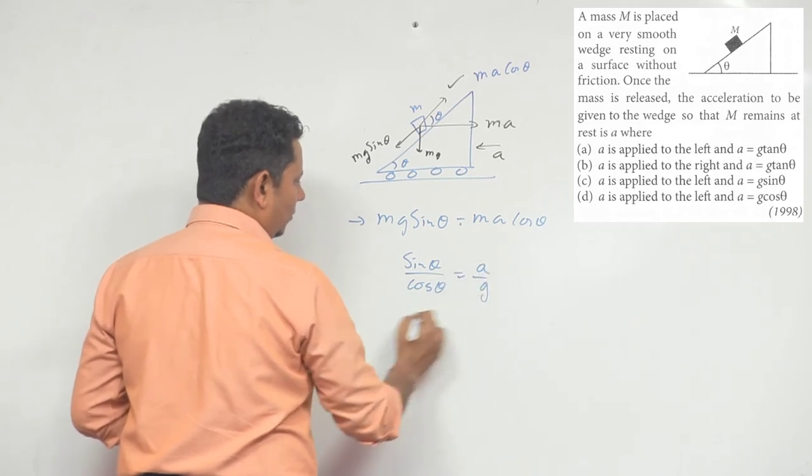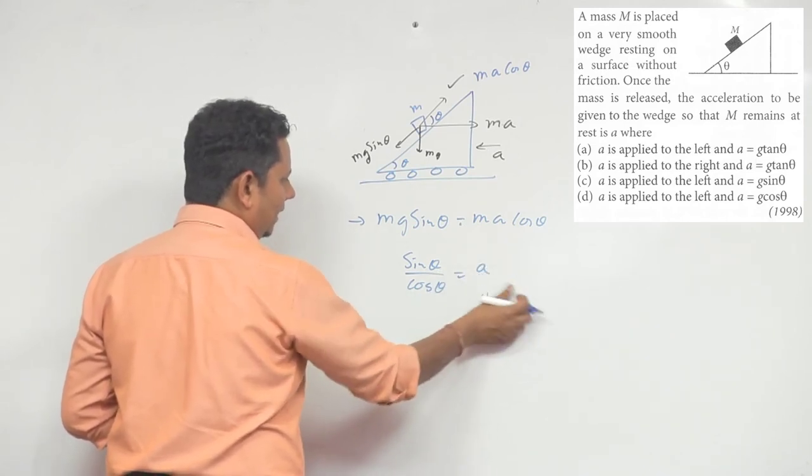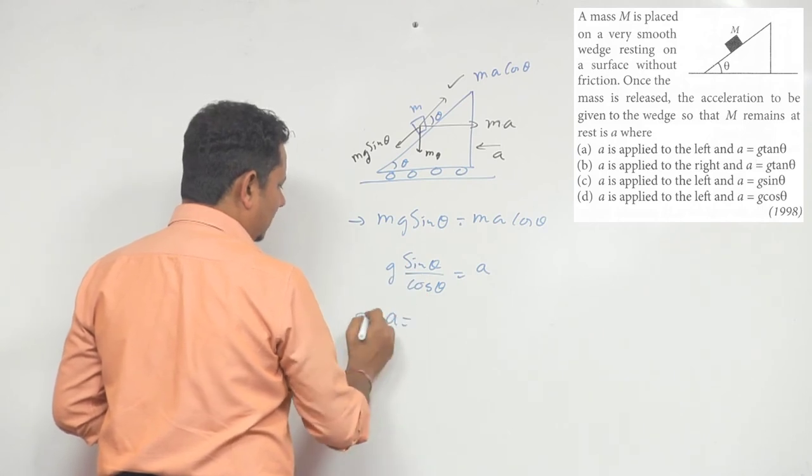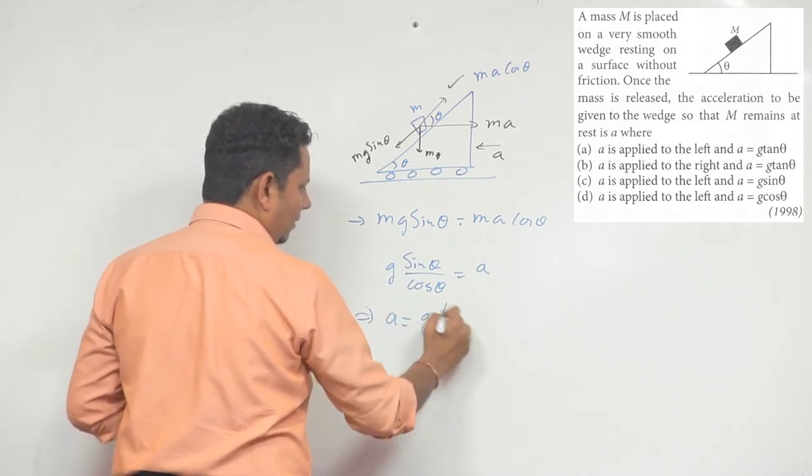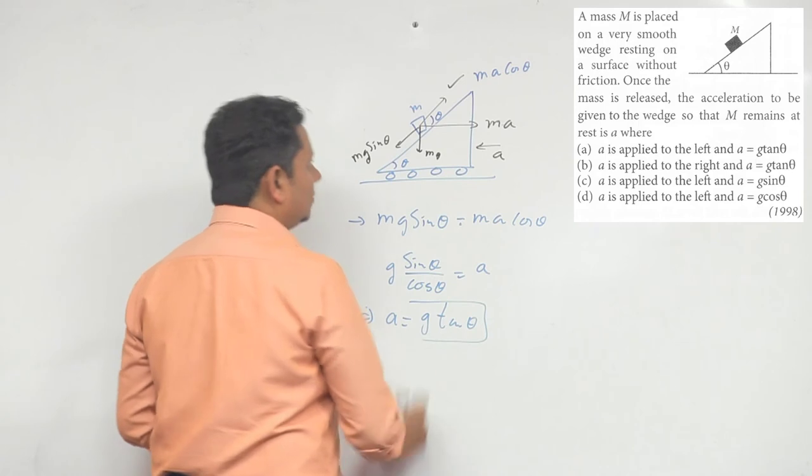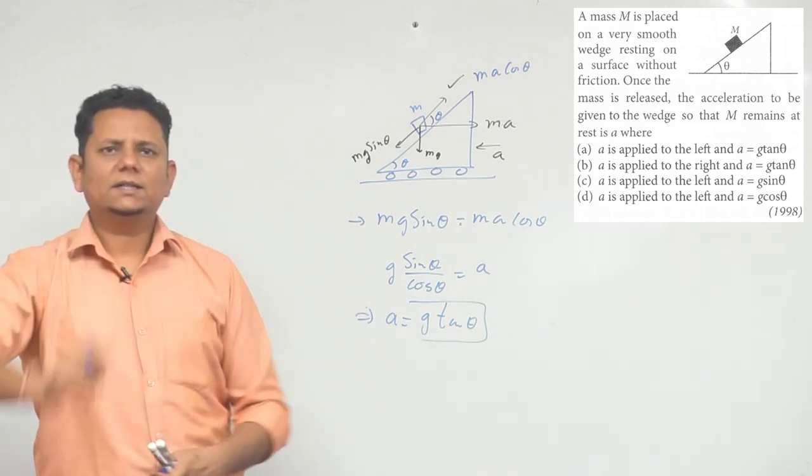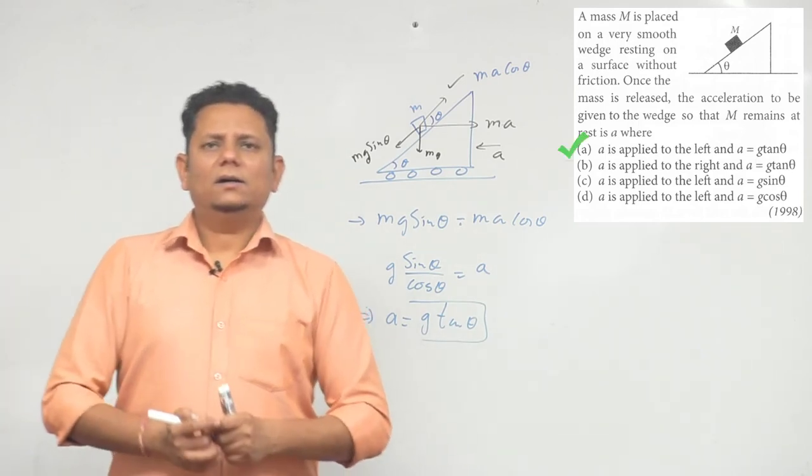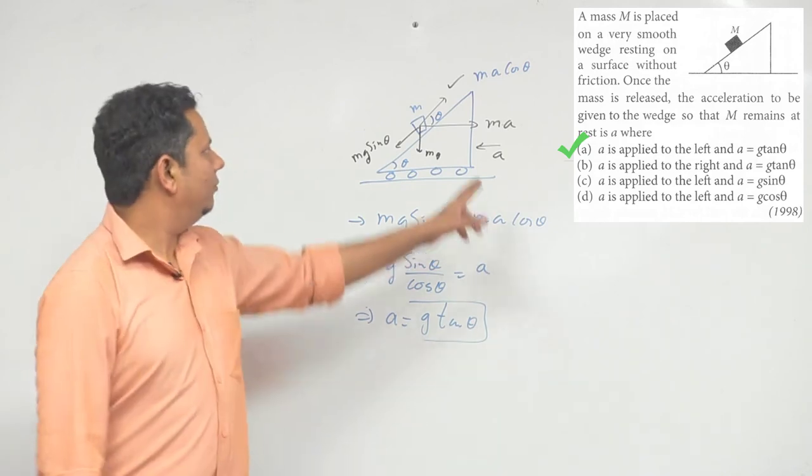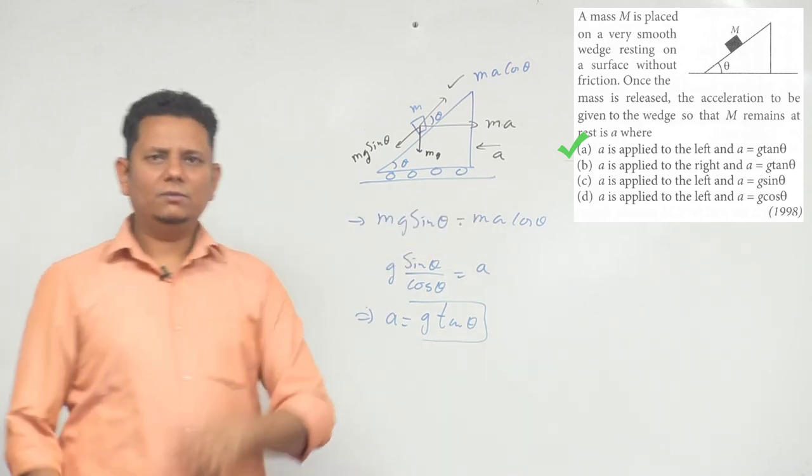This will be equal to a by g, which gives us a will be equal to g tan theta. So on this basis, the correct option is option number (a): value g tan theta and force applied towards the left would be the right answer.